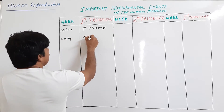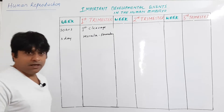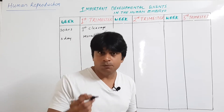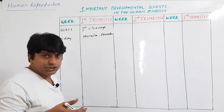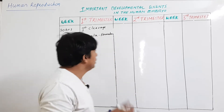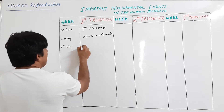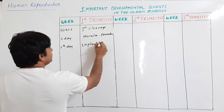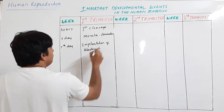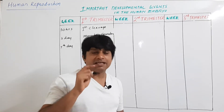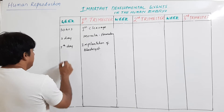The morula reaches the blastocyst stage — morula is up to the 16-cell stage, and later becomes the blastocyst. At the blastocyst stage, the developing embryo reaches the uterus, and on the seventh day, implantation of the blastocyst takes place.